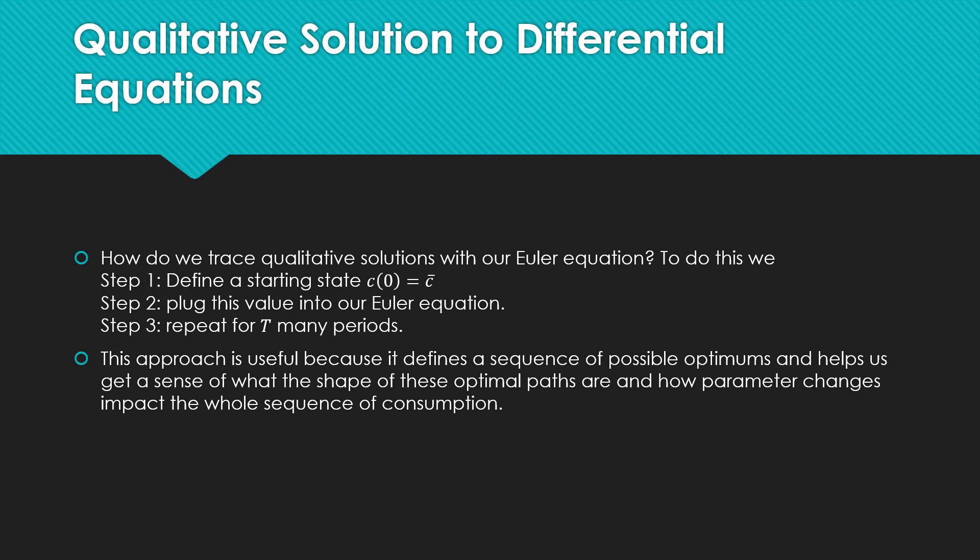So we're going to be using qualitative solutions. How do we trace them with our Euler equation? There's a three-step process. First, we have to define a starting state for C0 equal to C, plug that value into our Euler equation, and then repeat that for T many periods.